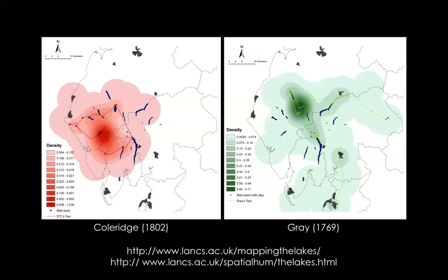As you can see, when looking at the map of Coleridge's tour, the eye is instantly drawn to the cluster east of Wasdale Head, near the point where Scafell Pike runs down into the remote valley of Eskdale. The gradation of Gray's map, by contrast, indicates that he devoted most of his attention to places near Keswick, where he spent a total of six nights during his tour.